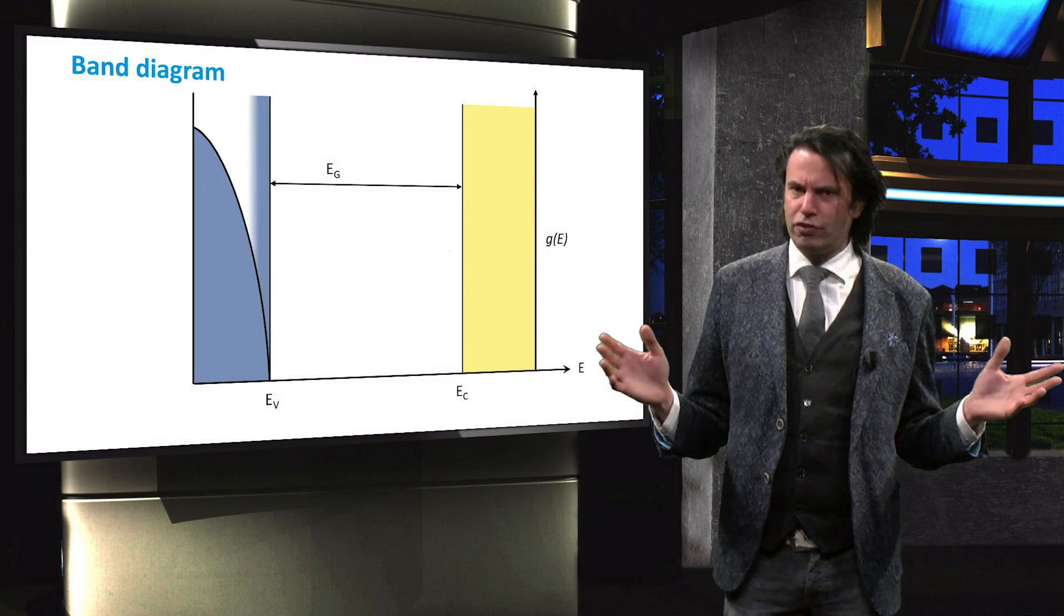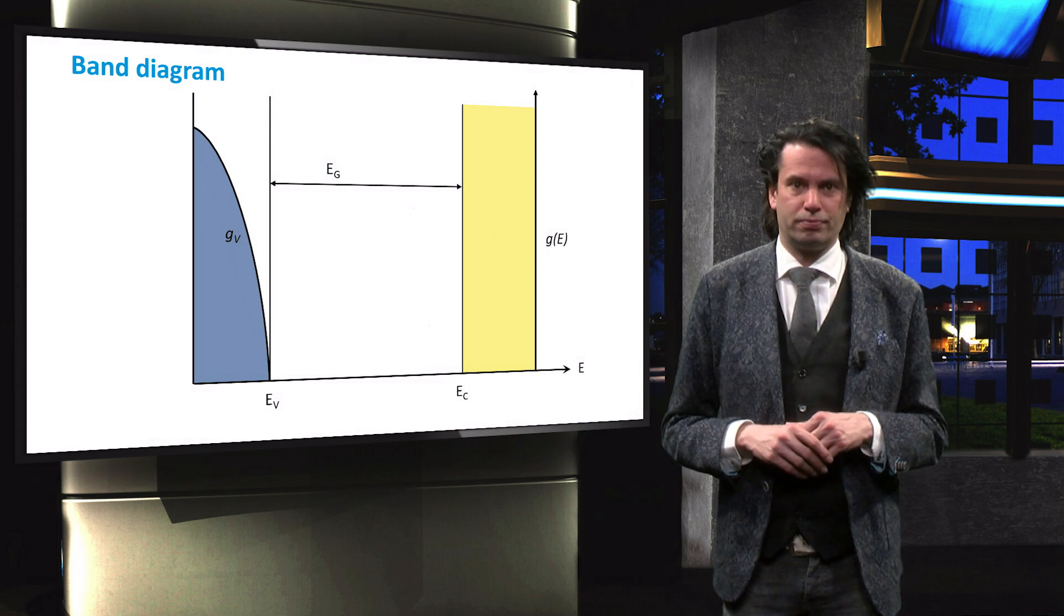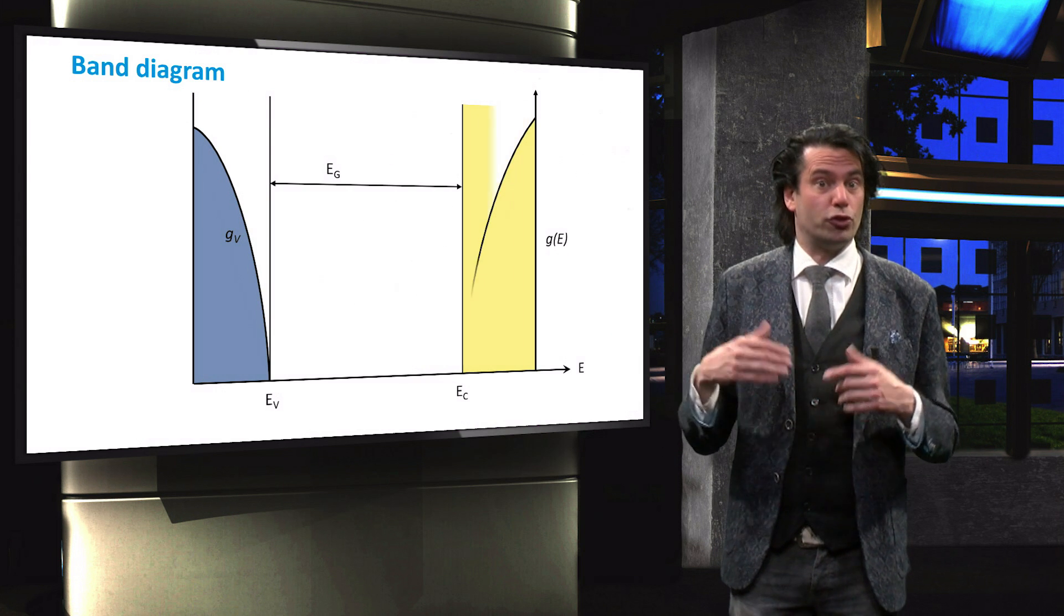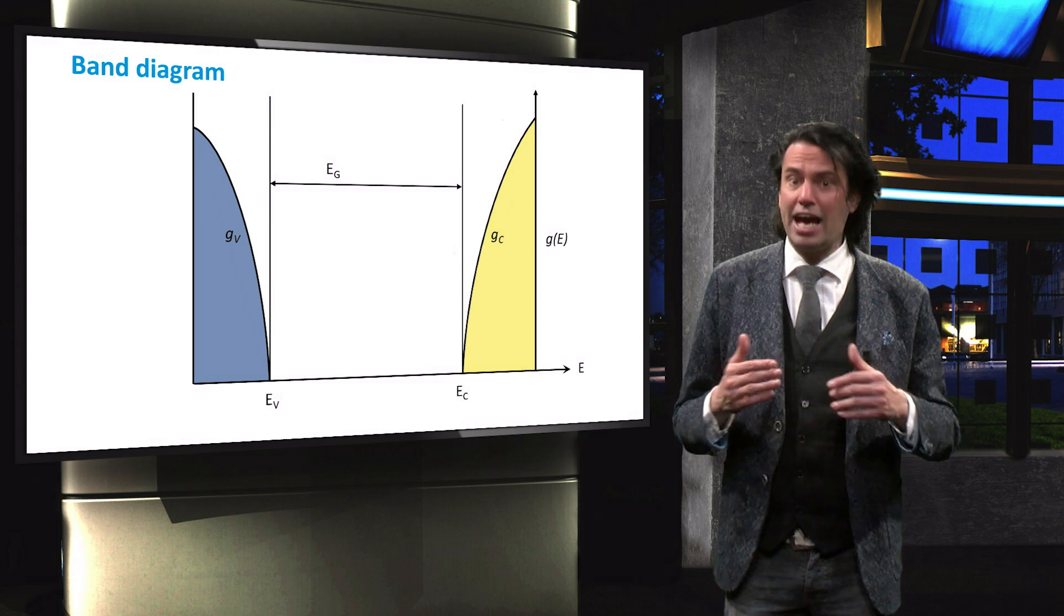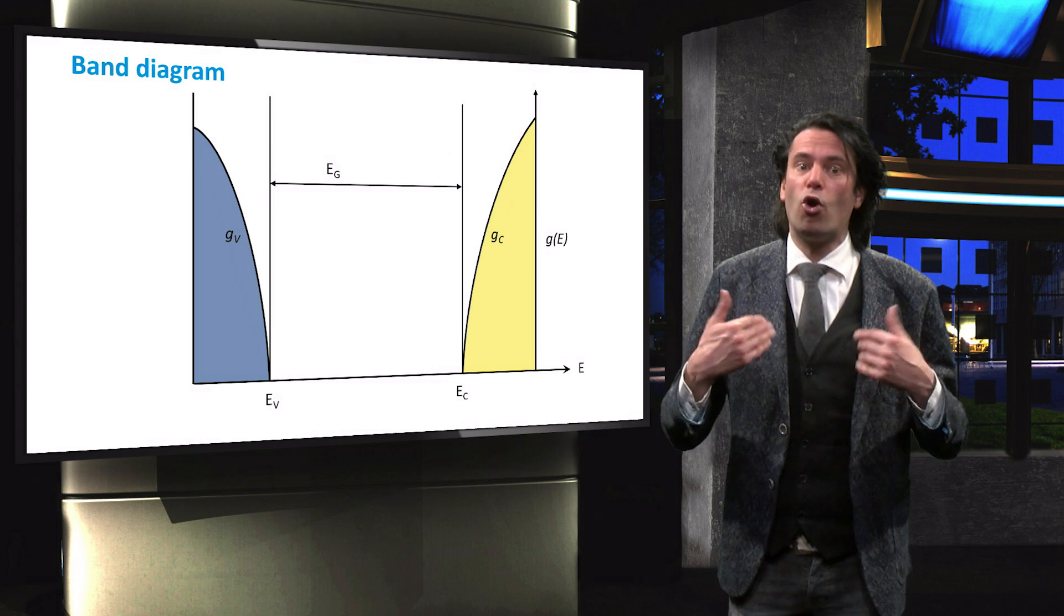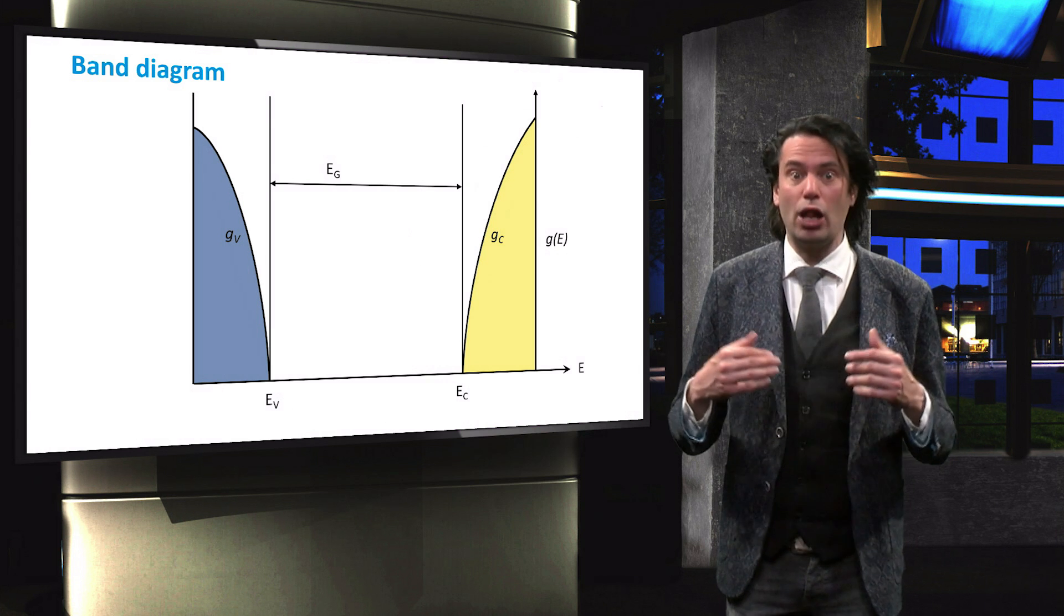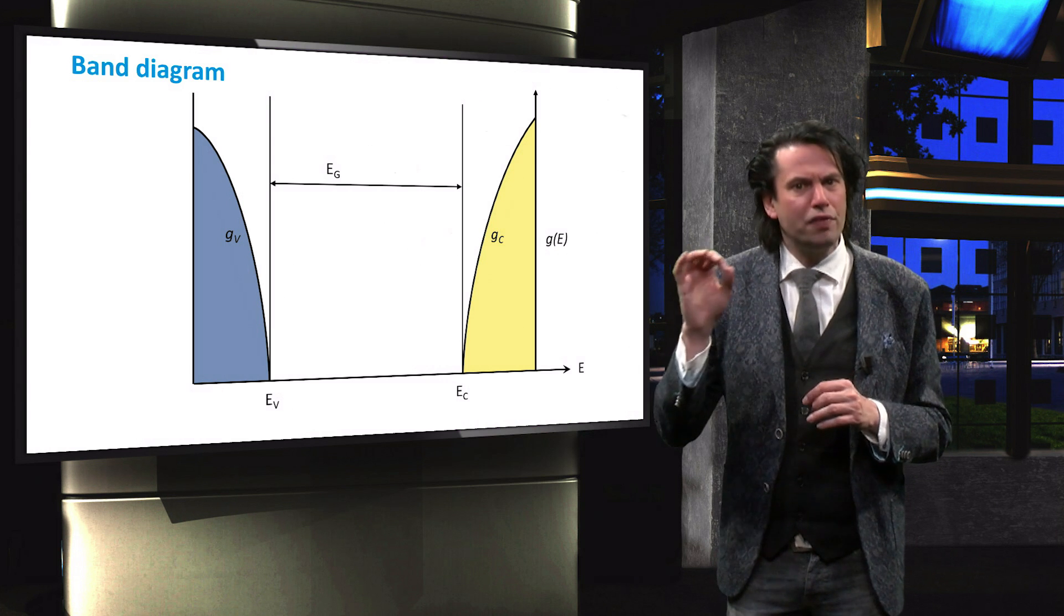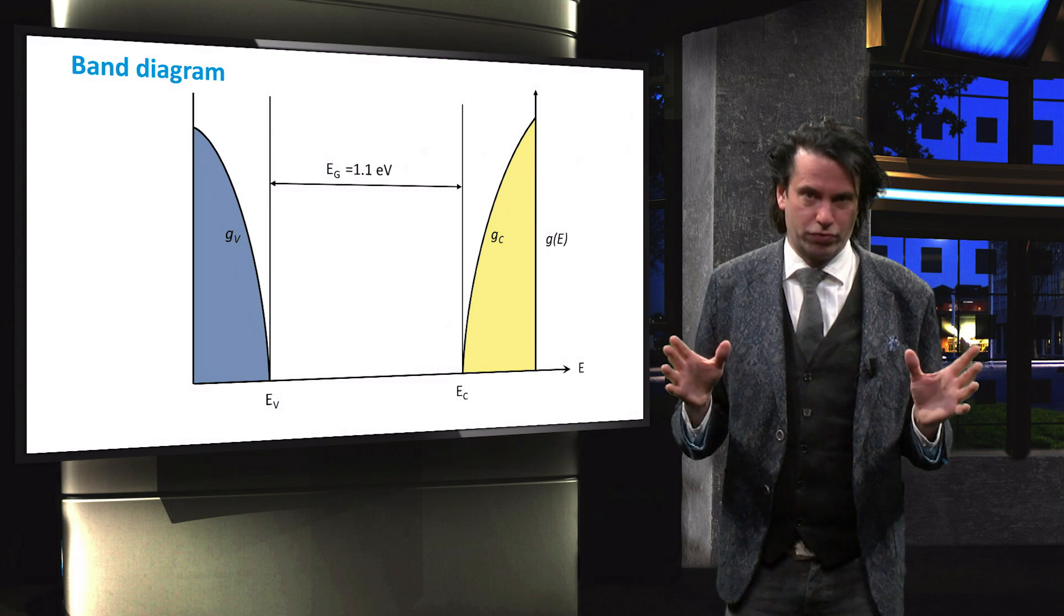The density of states of valence electrons in crystalline silicon is indicated by this curve. The density of states of the conduction electrons look quite similar. We can see that as we move further from the edges of the bands, more energy states are available. Crystalline silicon with its well-ordered structure has a well-defined band gap with an energy of about 1.1 eV.